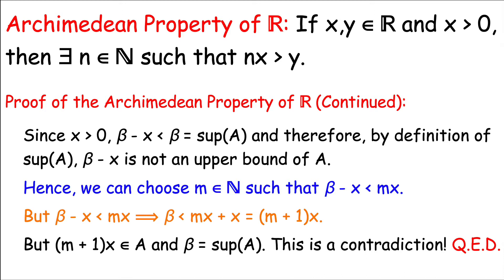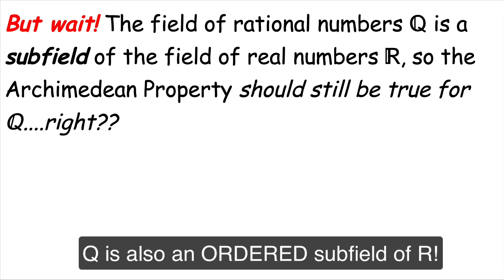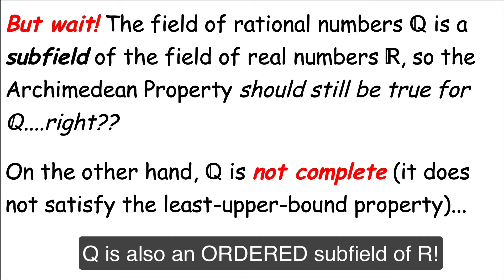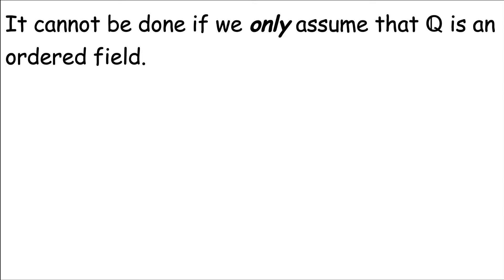This contradiction proves the Archimedean property. But you might be unsettled: the field of rational numbers Q is a subfield of R, so the Archimedean property should still be true for Q — yet Q is not complete and does not satisfy the least upper bound property. We needed the completeness axiom for the proof. In fact, this cannot be resolved if we only assume Q is an ordered field — the abstract ordered field properties are not enough to prove the Archimedean property.